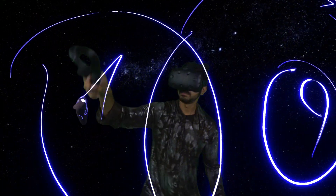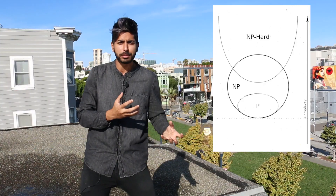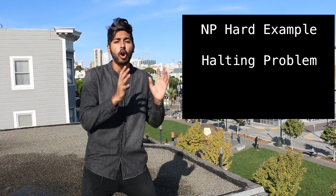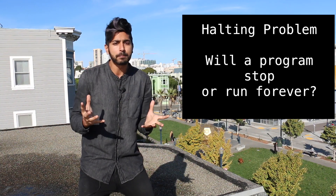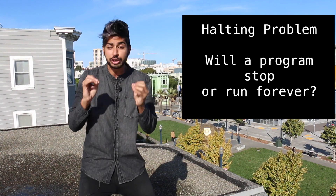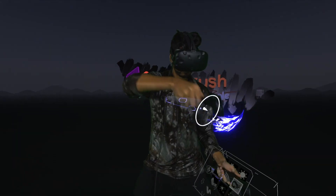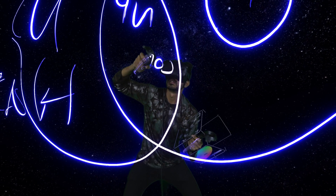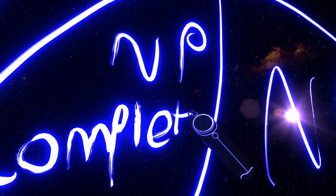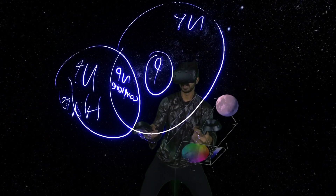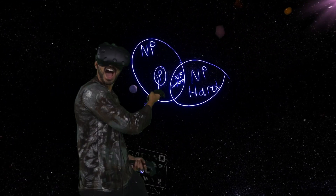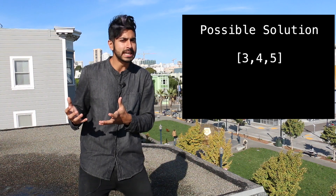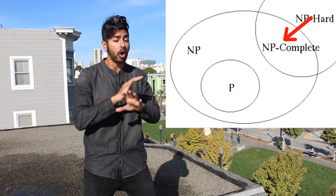There's also a set of problems called NP-hard that are at least as hard as the hardest NP problems. That means some of them can be verified easily, but others can't even be verified easily — they can't be solved or verified easily. An example would be the halting problem, which asks: given some computer program and an input, will that program finish running at some point or will it just continue running forever? The only known way to check a possible solution is to wait forever. The intersection of problems that are both NP-hard and NP are called NP-complete. These are problems we can't solve easily but can check, even though they are pretty difficult to check. An example of an NP-complete problem is finding the longest common subset between two sets — you can't solve it easily, but you can check the solution with some effort. NP-complete problems are the hardest NP problems to check.